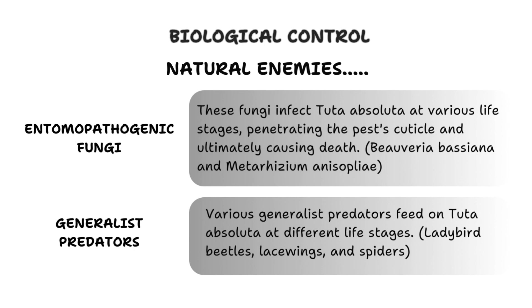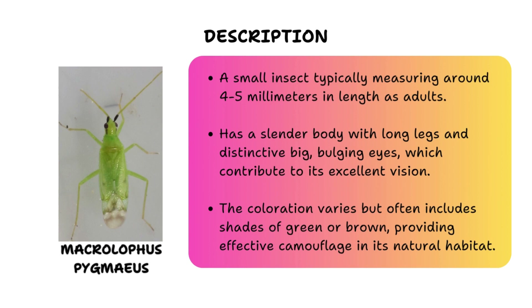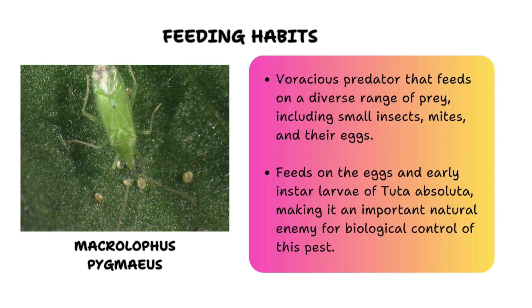Shifting focus to natural enemies that are highly effective against Tuta absoluta and commercially available: the first is Macrolophus pygmaeus, also known as the big-eyed bug. It is a very small insect, typically measuring around four to five millimeters, with a slender body, long legs, and distinctive bulging eyes that contribute to excellent vision. Its coloration varies but often includes shades of green or brown, providing effective camouflage. Macrolophus pygmaeus actively searches for Tuta absoluta eggs on tomato plants and inserts its needle-like mouthparts into the eggs to extract their contents, effectively killing them.